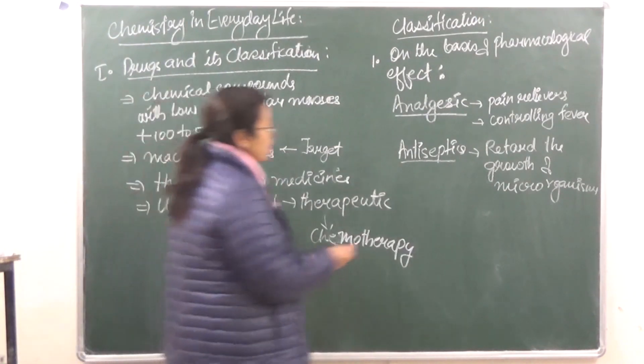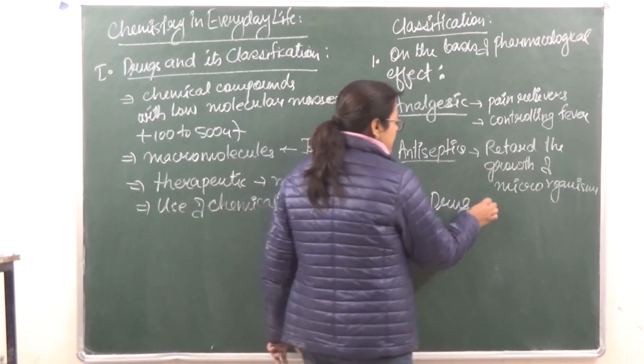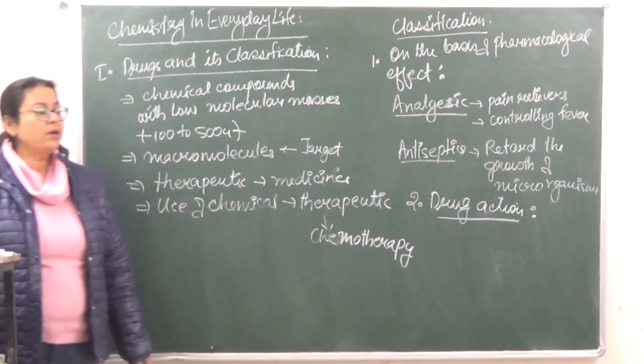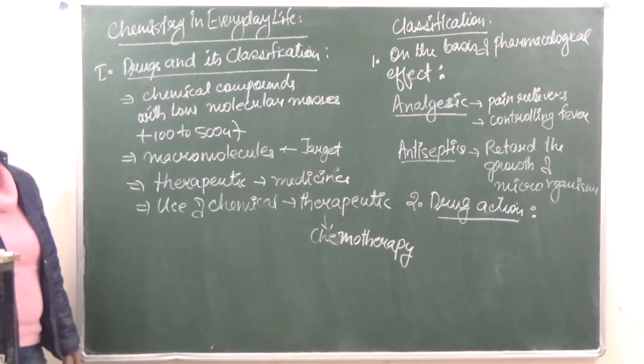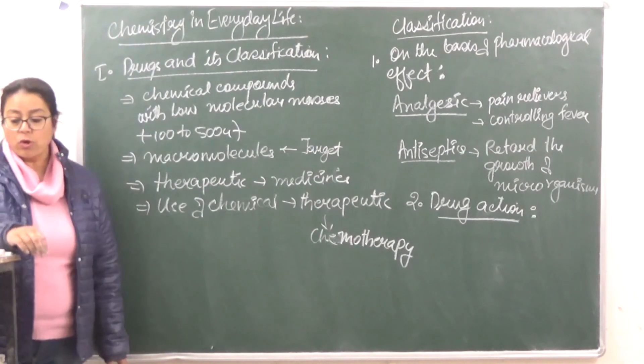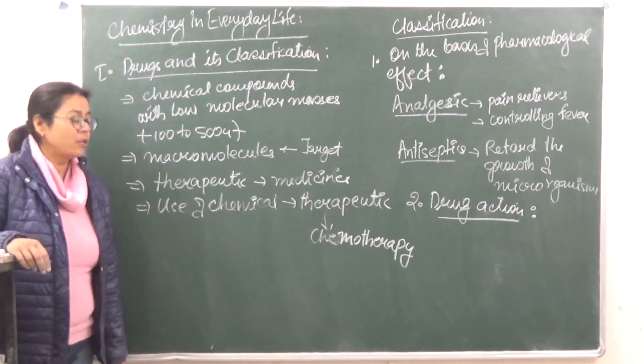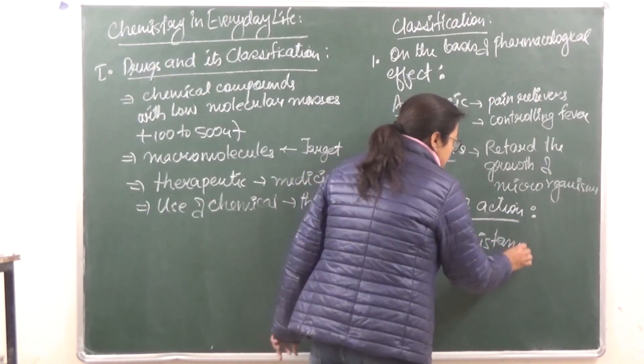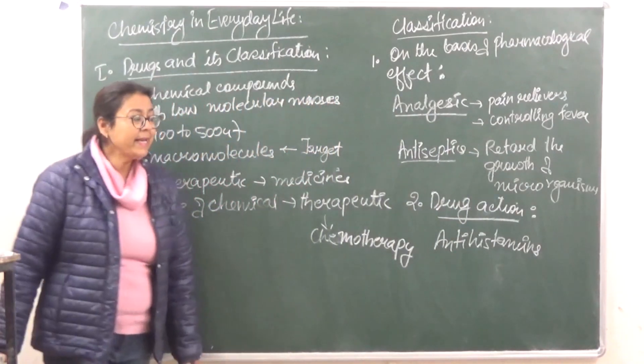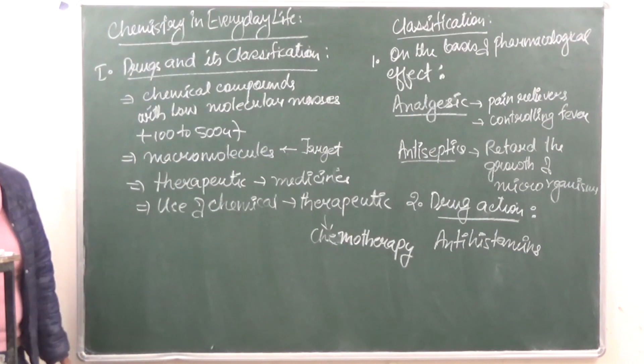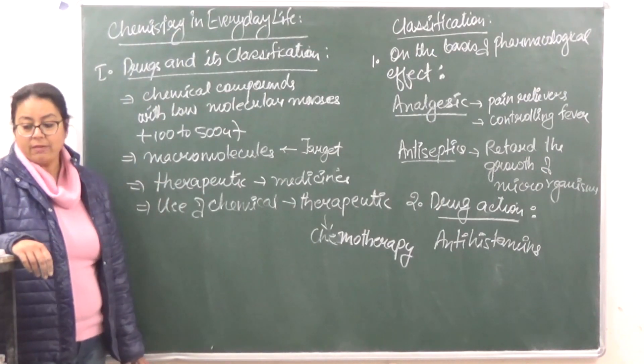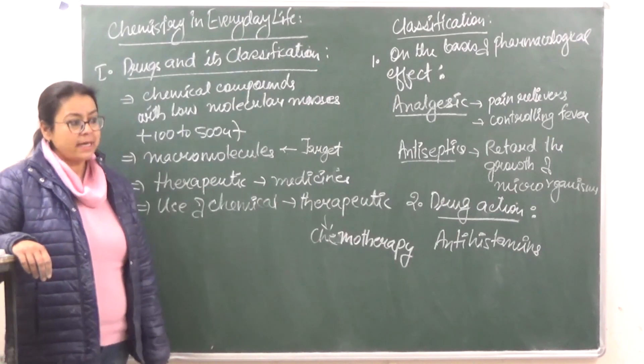Second classification is based on the drug action. Drug action means which drug will affect which biochemical process. For example, we have antihistamines. So antihistamines, the histamines in our body cause inflammation. To reduce that inflammation, we use antihistamines which are going to reduce the inflammations. So this we will also study coming up.